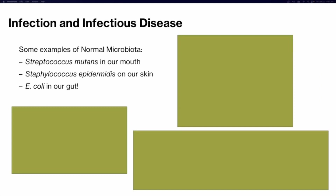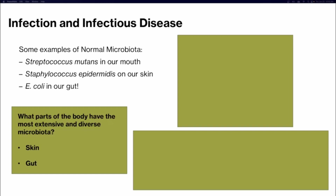Some examples of normal microbiota: Streptococcus mutans in our mouth is the most common bacteria that leads to dental caries or cavities. Staphylococcus epidermidis on our skin is the most common bacteria that calls our skin home — we all have that on our skin. And many types of E. coli in our gut are essential for breaking down food and giving us essential vitamins and nutrients. The parts of our body with the most extensive and diverse microbiota are our skin, which makes sense because it's in constant contact with the environment, and our gut.